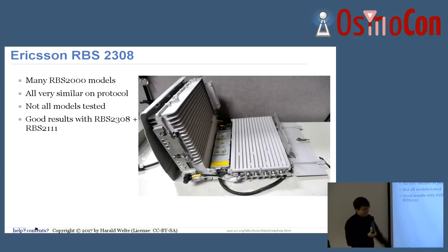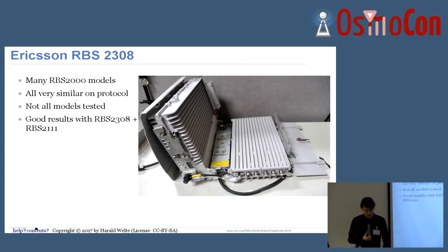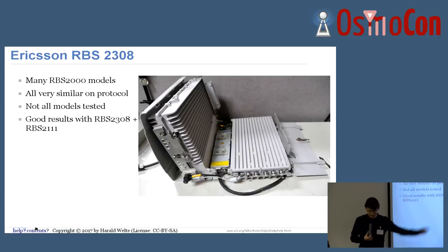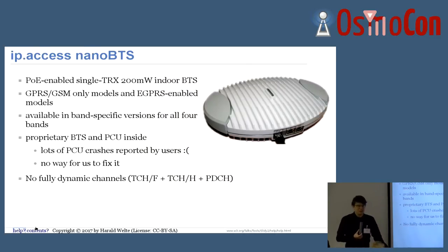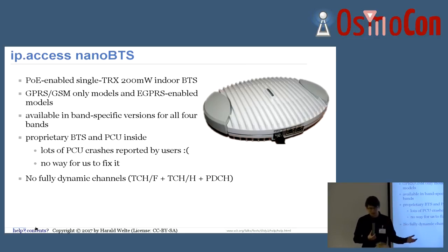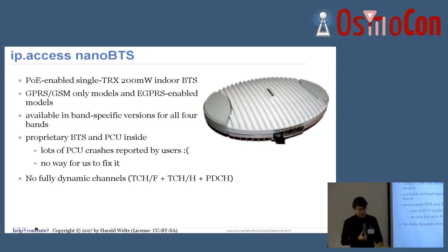We have some other devices we support over time. There's the RBS2308, and there are many other RBS2000 models — also the RBS2111. This is actually a picture like you can find on eBay right now for around $300-$500, and it has four TRX already inside — a pretty good price point. There's also the IPS Nano BCS — an older one, there are more modern ones — and that's already getting into the IP-based world. They're PoE-enabled, and you can get them in GPRS-only or eGPRS-enabled models, band-specific and so on.